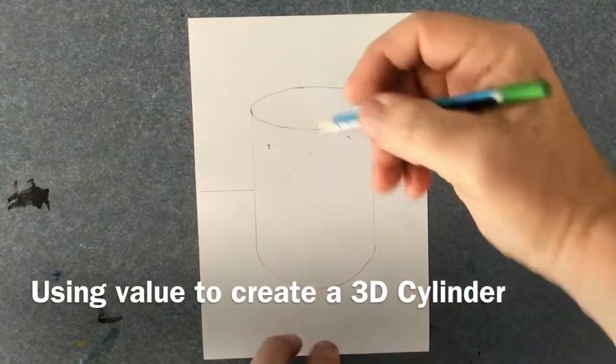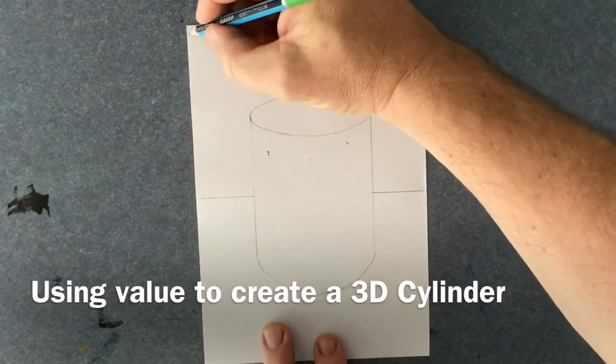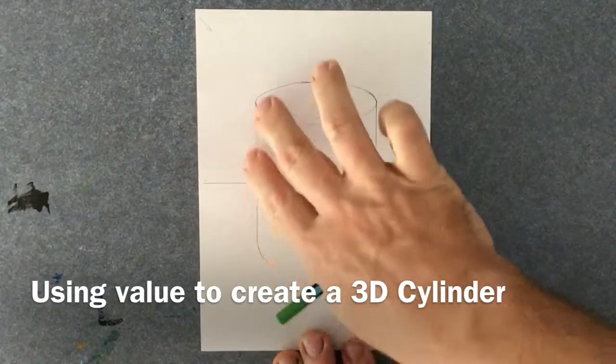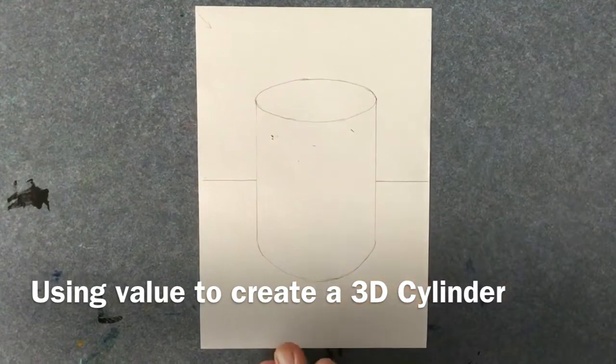Okay, we're going to shade and we're going to pretend that our light is coming from here. So the light is going to hit this side of the cylinder, so this is going to be light and then it gets darker as we go around.